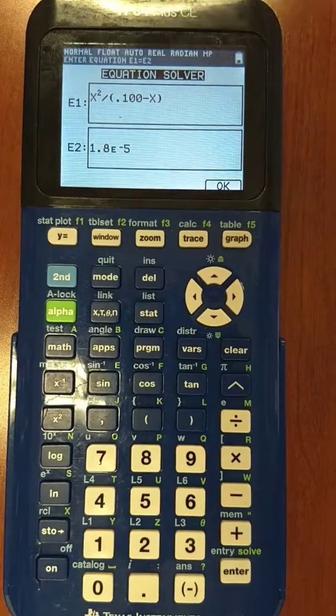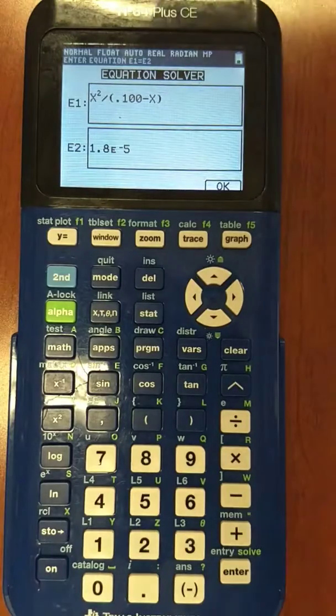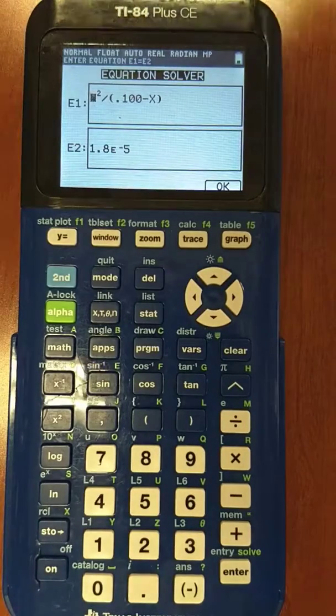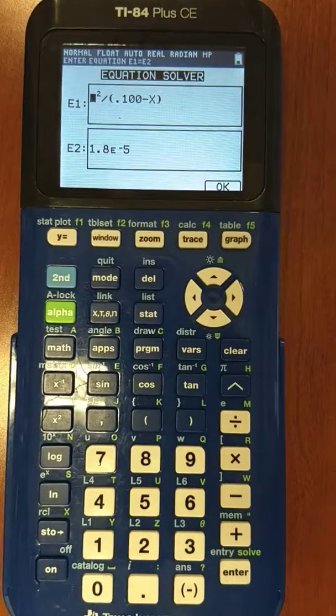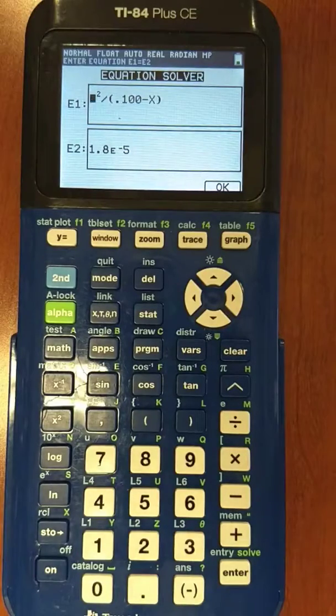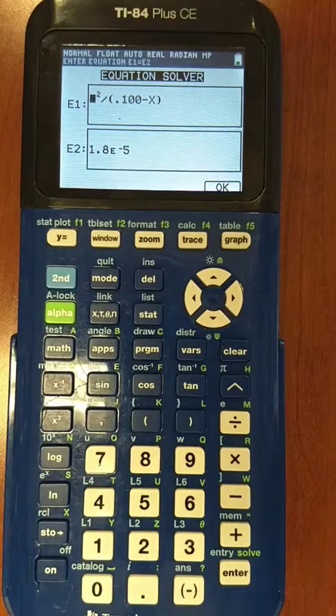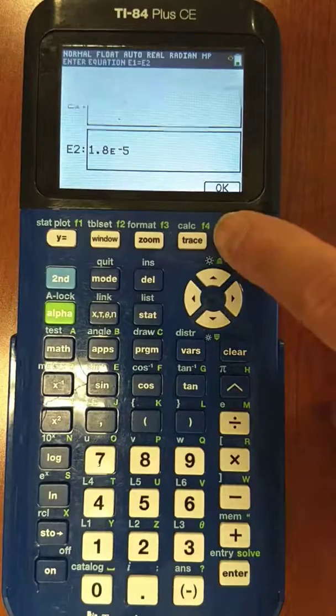And then I made equation 2 just be the Ka value. So what the calculator will do is it's going to find where X squared divided by 0.100 minus X is equal to equation 2, which is just 1.8×10^-5. So there is our equation, and we're going to press OK.